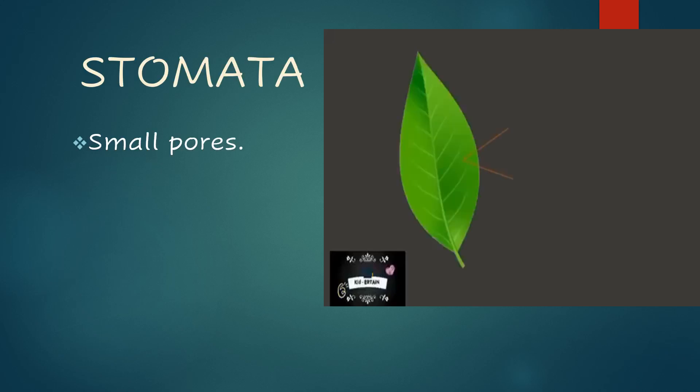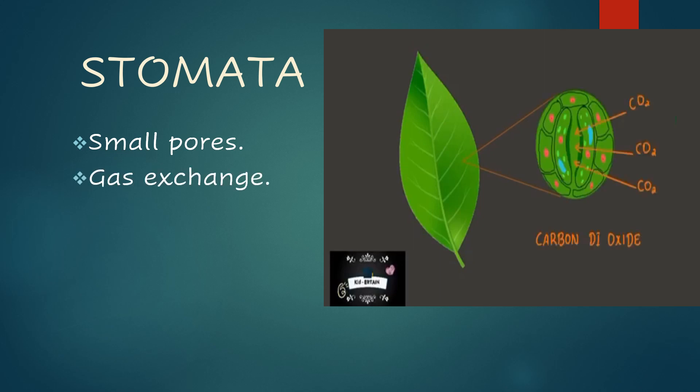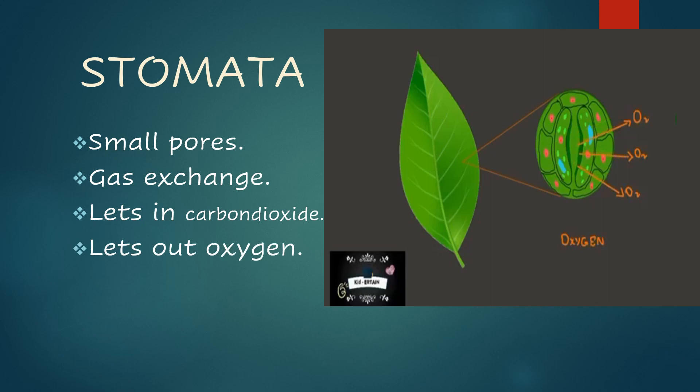Leaves have a number of small pores called stomata. This plays an important role in the exchange of gases. The carbon dioxide enters the plants through stomata and the same way oxygen goes out through the stomata.